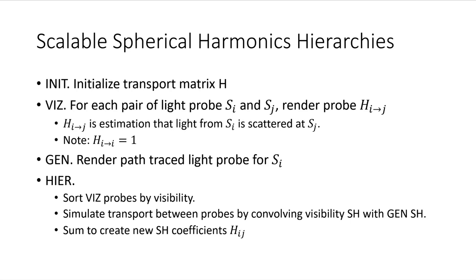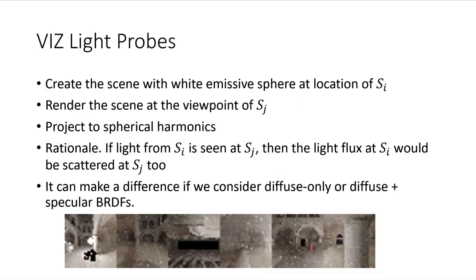Once we determine visibility from each SPHL, we generate the light probes in the gen step. Gen is short for generation, and we simply use a path tracer to generate a cube map rendering of the environment at the location of the SPHL. Finally, we evaluate the transport of light from one SPHL to another in the Hierarchy Step which we abbreviate HIER. We discuss this a little later, but let us look at the vis light probes. The vis light probe is a cube map render of the scene from the location of SPHL, S sub J, and we render a white emissive sphere at the location of S sub I. Our light probe contains a measurement of how much light at S sub I is visible at S sub J. We use this to scale the spherical harmonics coefficients in the Hier step. We will note that it does make a difference if you use specular materials in this step. We are just not quite sure if it is supercritical. That's future work.